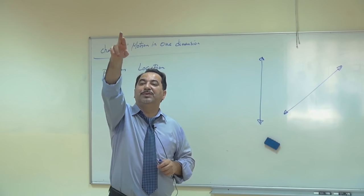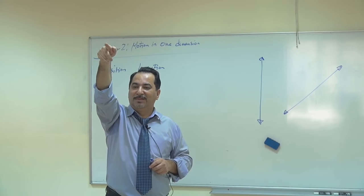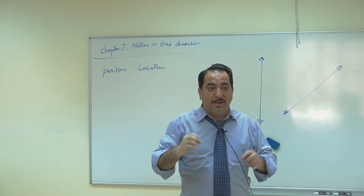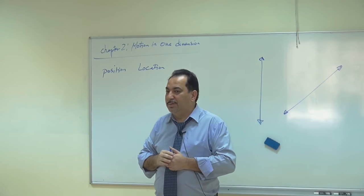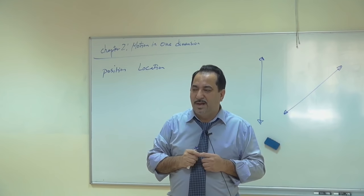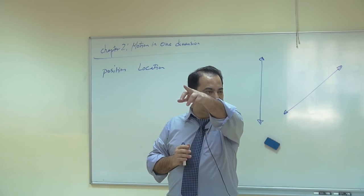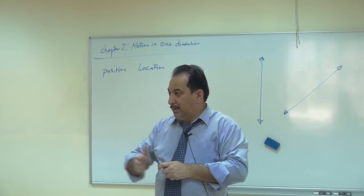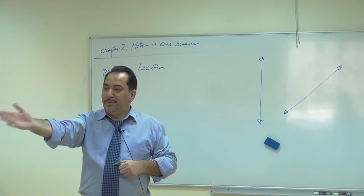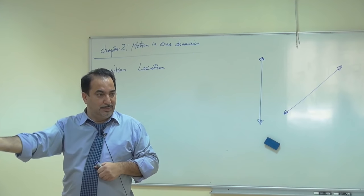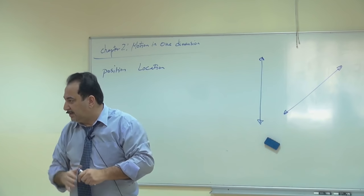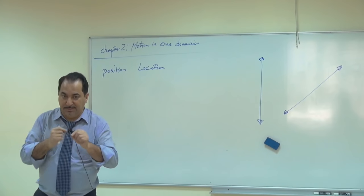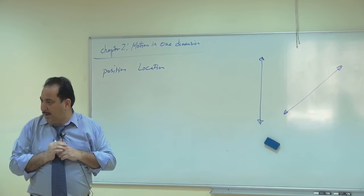Can you see that when I ask you what's your position, you always refer to a reference? She said fifth from the first row, and this student said she's between those two — a reference to something else. So when you want to describe position, the first thing you need is a reference point to refer to.